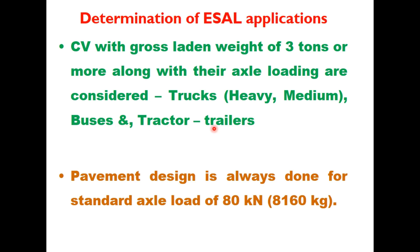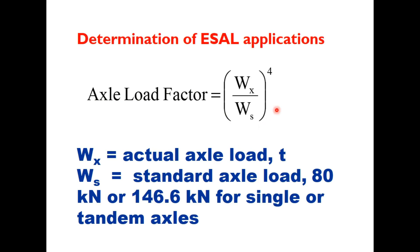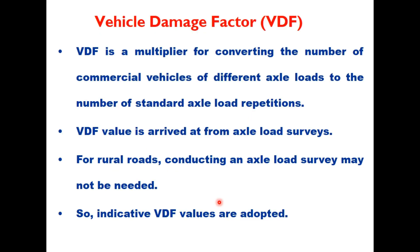The types of vehicles to be considered include trucks (heavy and medium), buses, and tractor-trailers. Pavement design is always done for a standard axle load of 80 kN (8.16 tons). All axles with loads other than the standard axle load are converted into equivalent standard axles using the fourth power law, similar to the vehicle damage factor approach, where Wa is the actual axle load.